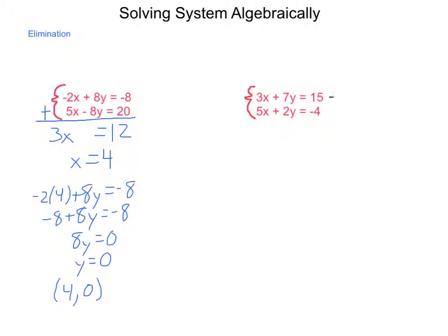So I'm going to multiply my first equation by 5 to give me 15x's. I end up with 15x + 35y = 75. My second equation, in order to get 15 for the x's, I'm going to multiply the whole thing by 3, so I end up with 15x + 6y = -12.